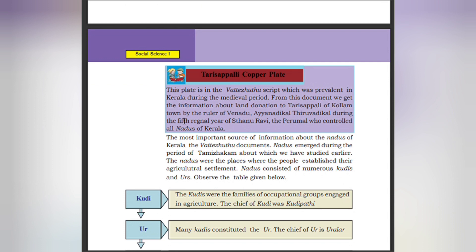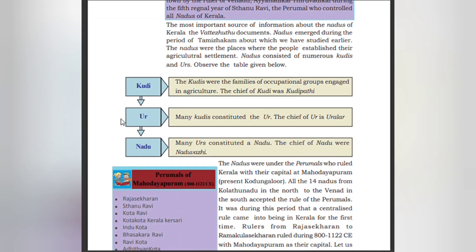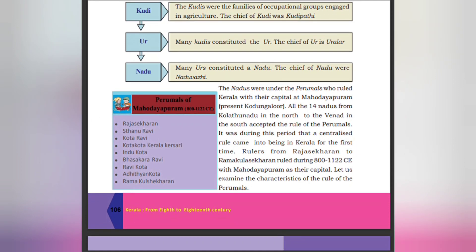From the document we get information about a land donation to the Tharisapalli church of Kollam town by the ruler of Venad, Ayyandikal Thiruvadikal, during the fifth regnal year of Sthanu Ravi, the Perimal who controlled all nadus of Kerala. Nadus emerged during the period of Tamilagam. The nadus were places where people established agricultural settlements. Nadus consisted of numerous kudis and urs. The kudis were families of occupational groups engaged in agriculture; the chief of kudi was Kudipati. Many kudis constituted the ur; the chief of ur is Uralar.